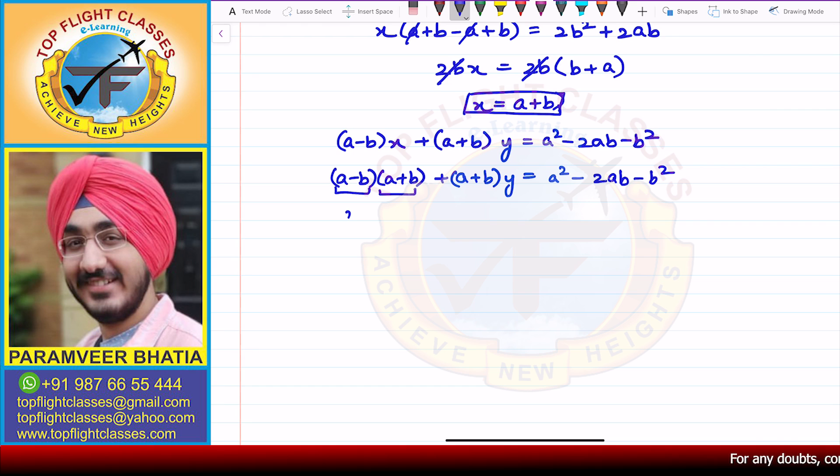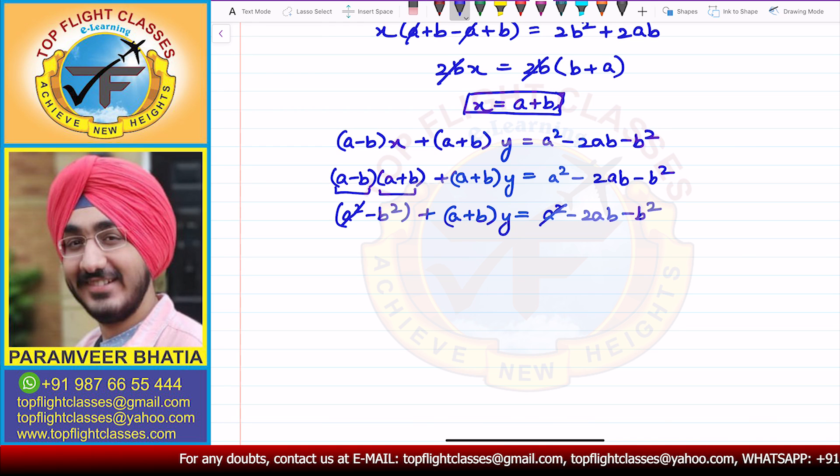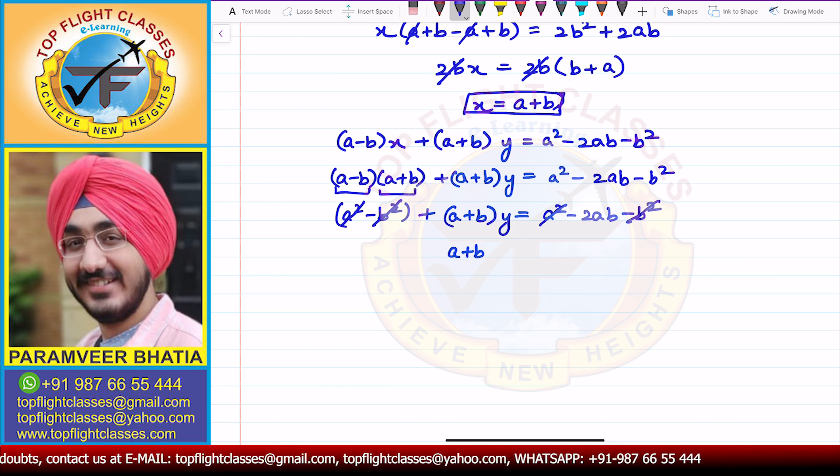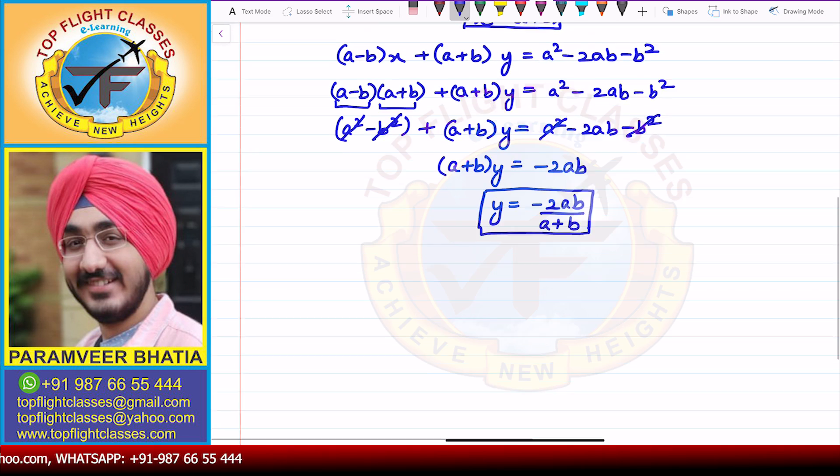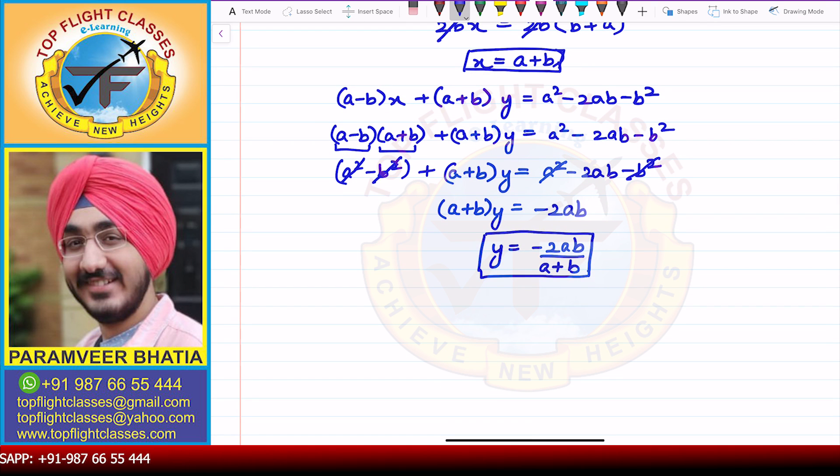(a-b)(a+b) is a² - b², plus (a+b)y = a² - 2ab - b². Now a² and a² cancel, minus b² and minus b² cancel. From here I get (a+b)y = -2ab. So y comes out to be -2ab/(a+b). So x = a+b and y = -2ab/(a+b), which is what is required.